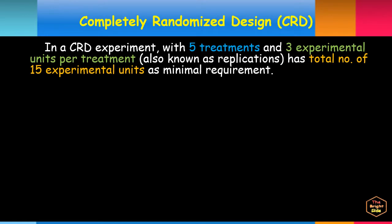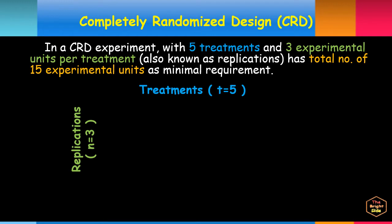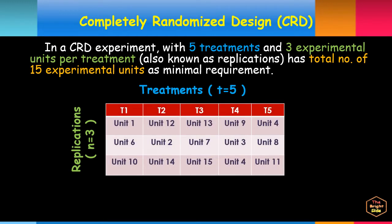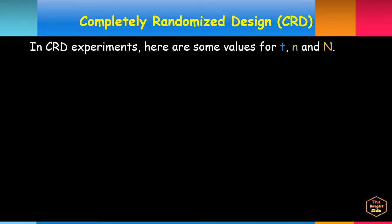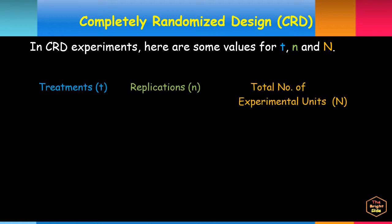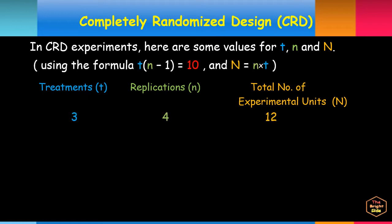In this CRD experiment with five treatments, three replications, and 15 experimental units total, note how each experimental unit has been allotted randomly to each treatment. Here are some values for T treatments, n replications, and N total experimental units computed using the error DF formula.